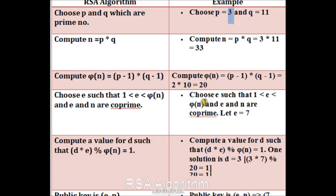Then I have to choose a value of E. In our example, the value of E lies between 1 and 20, and within that range, 7 is a prime number. So I have chosen the value of E equal to 7.